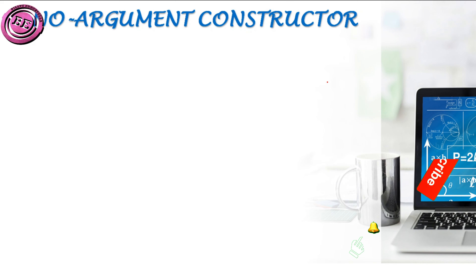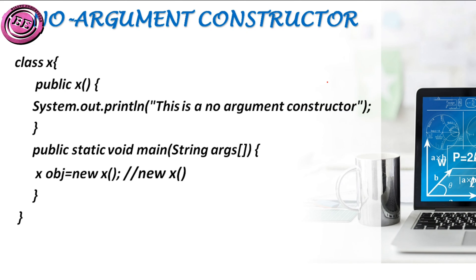A constructor in which we don't have any arguments is known as a no-argument constructor. Here is an example: we have a class named x, and using that class name we created a constructor named x. In that particular constructor I am going to print some data. You can observe that there are no arguments — we don't initialize any variables in this constructor. The constructor in which there are no arguments is known as a no-argument constructor.